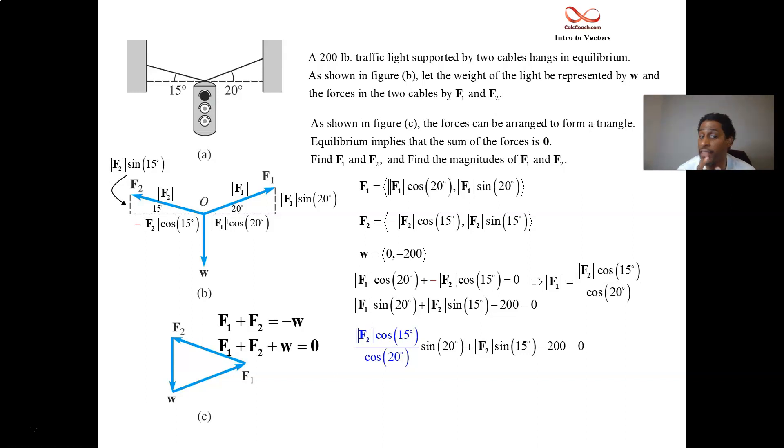One thing you can do to make your life easier is to recognize that you have sine of 20 divided by cosine of 20. So why don't you call it tangent? Mag F2 is in both of these terms on the left. We're going to factor it out. You'll be left with the cosine 15 and the tangent of 20 in the second term.